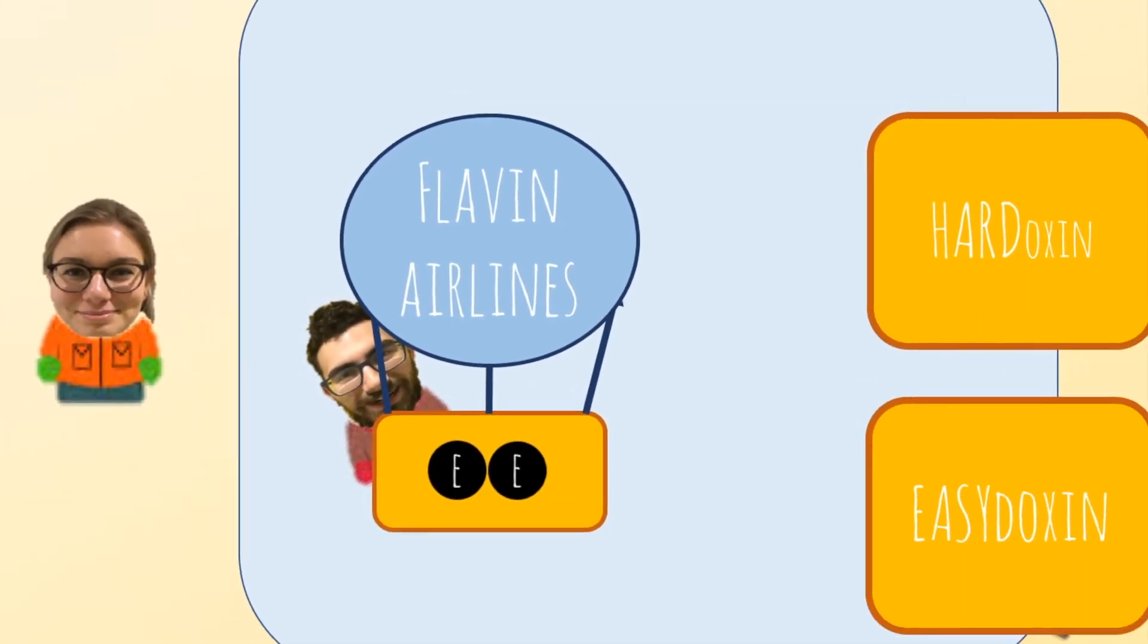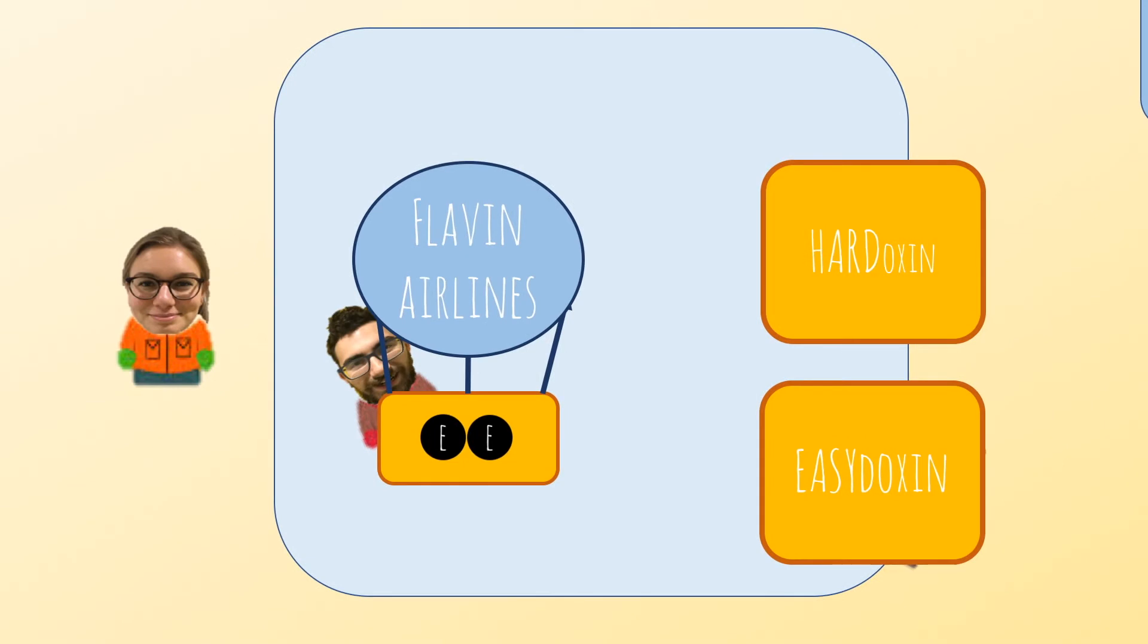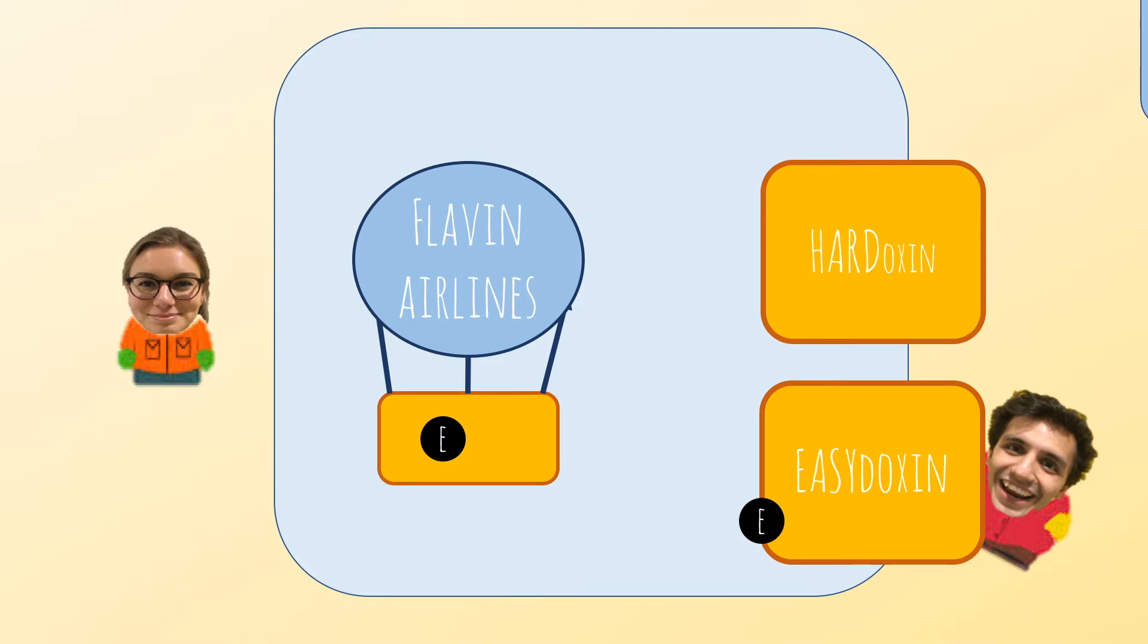Look at the different energy levels of each carrier, that are represented as their height. Since flavin is higher in energy level than the ecidoxin here, electrons can just go to the ecidoxin in a favorable way. However, as you might imagine, transferring electrons to hardoxin is not so favorable.